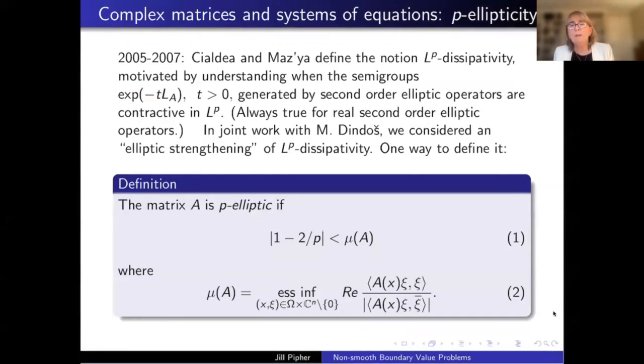But here the matrix A could take on complex values and so they're asking some questions about this operator. These operators which were sort of always true for real operators but were not always true for complex valued operators. So what Dindosh and I did was consider what we called a strengthening or elliptic strengthening of this notion that they defined, this LP dissipativity. And here is one way to define this and I will introduce another way that will look a little more algebraic and easier, but let me introduce this because this was our first elliptic strengthening of this Chaldea and Mazia notion. So I'm going to define a matrix A, and it's got complex valued coefficients. And I'm going to define this to be P elliptic if this quantity, mu sub A, which I'll make a remark on in a moment, is bounded from below by a quantity that depends on P.